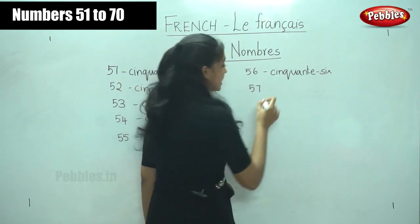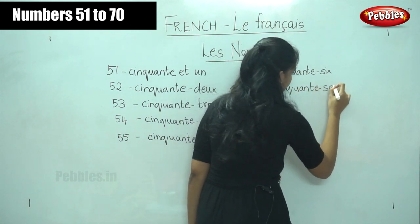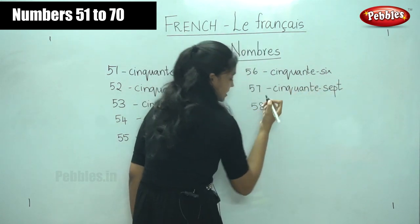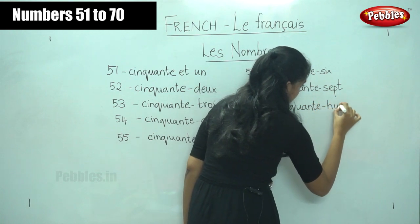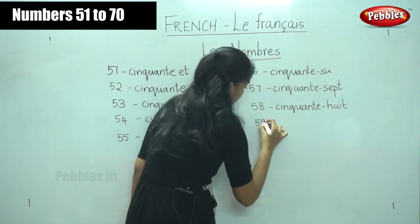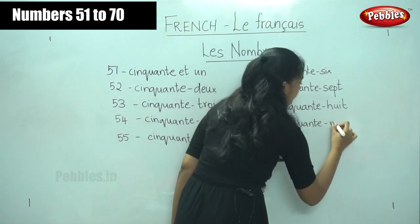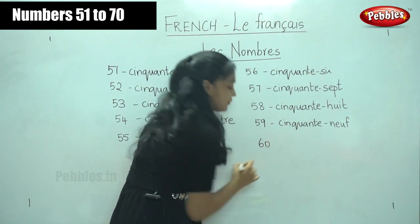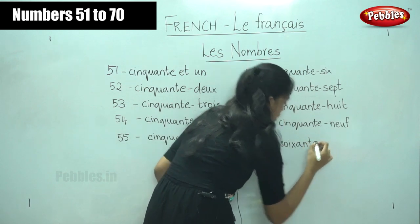For fifty-seven, cinquante sept. For fifty-eight, cinquante huit — fifty-eight. For fifty-nine, cinquante neuf. And finally, do you remember the last number we learnt? What do you say for sixty? Yes, it is soixante — sixty.